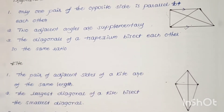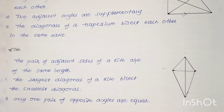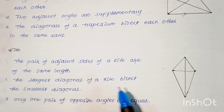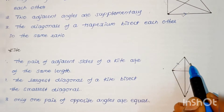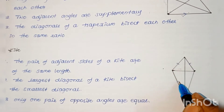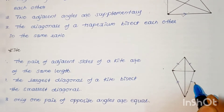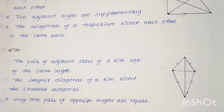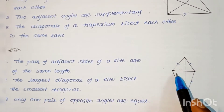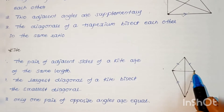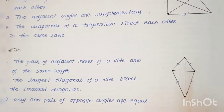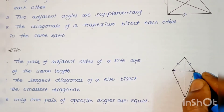In a kite, pairs of adjacent sides are equal — these two sides are equal and those two sides are equal. The largest diagonal bisects the smaller diagonal into two equal parts. Only one pair of opposite angles are equal.